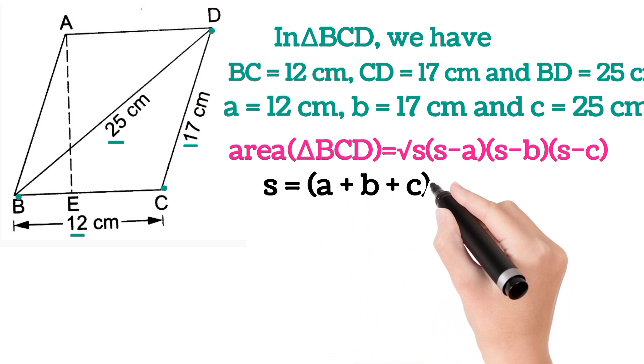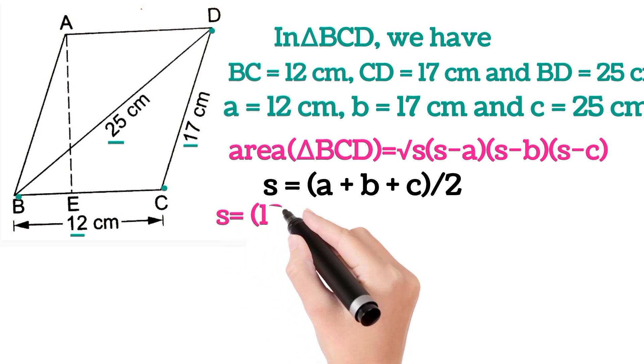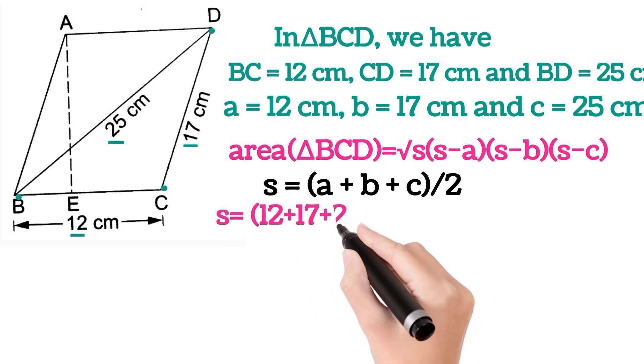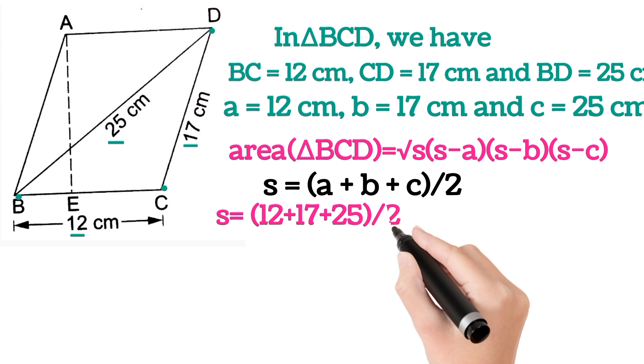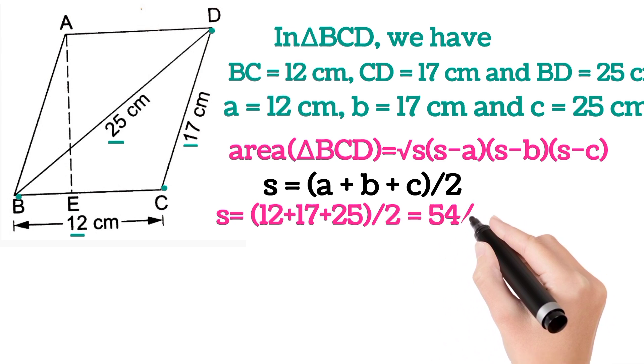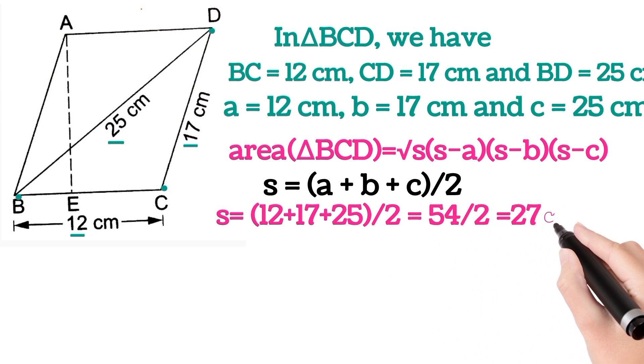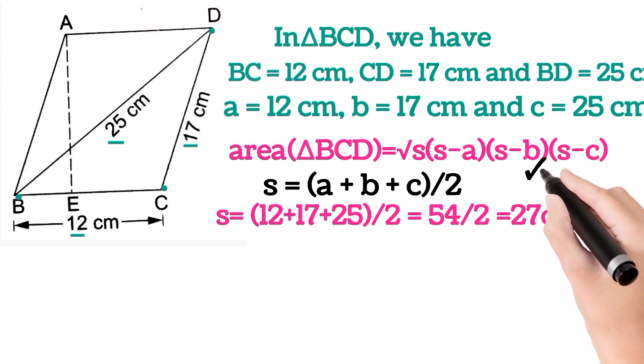Now on substituting the values, we will get s is equal to (12 plus 17 plus 25) divided by 2, that is 54 divided by 2, that is 27 centimeters. Now substituting this value here...